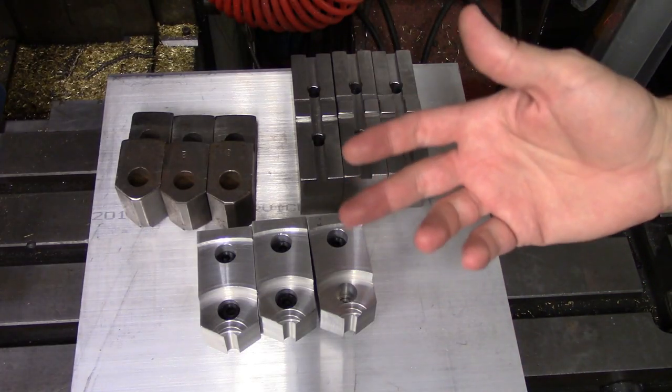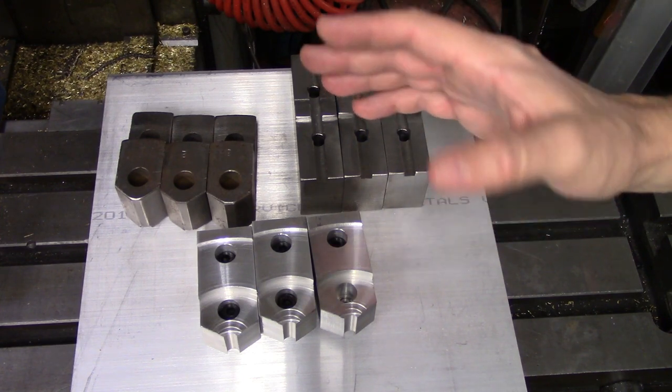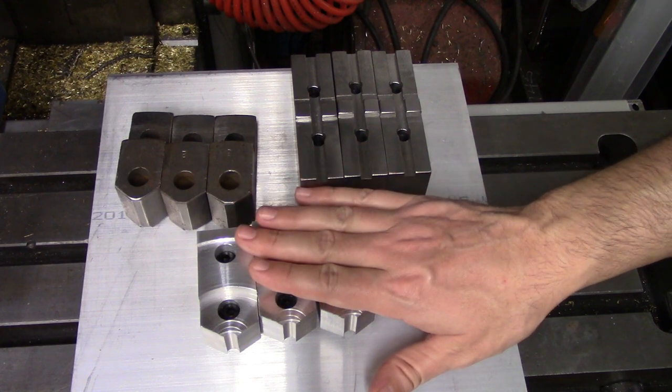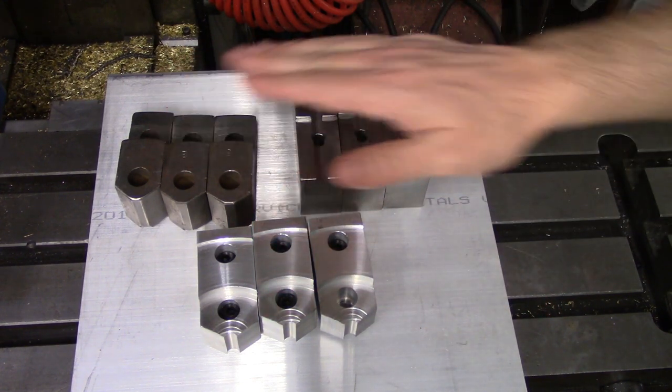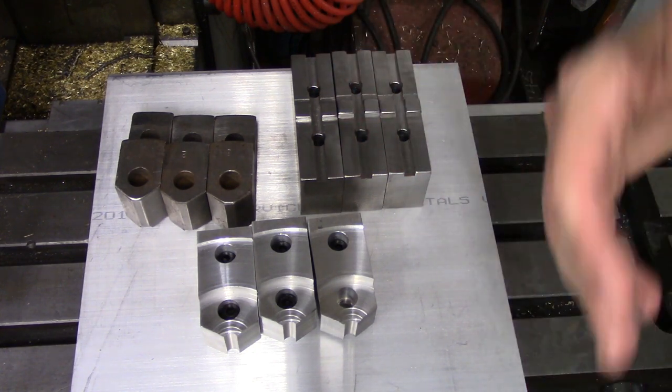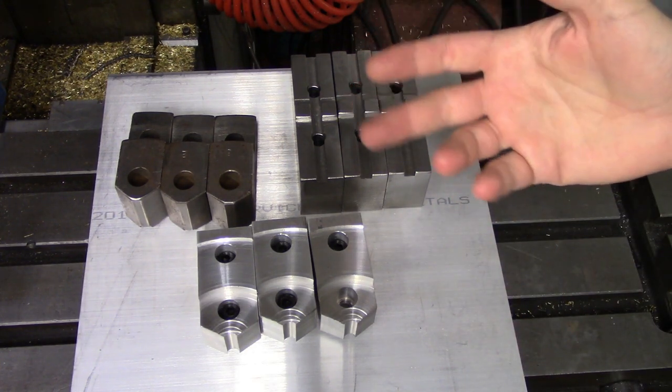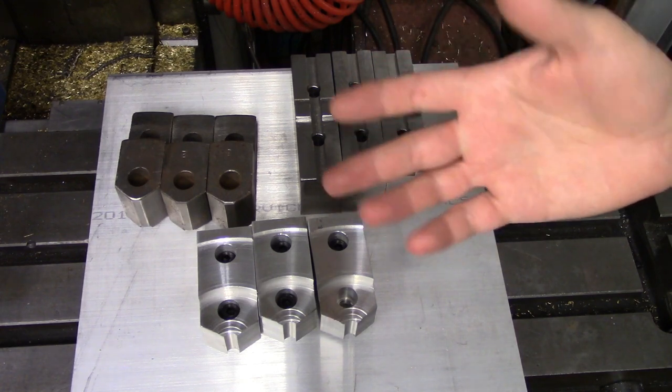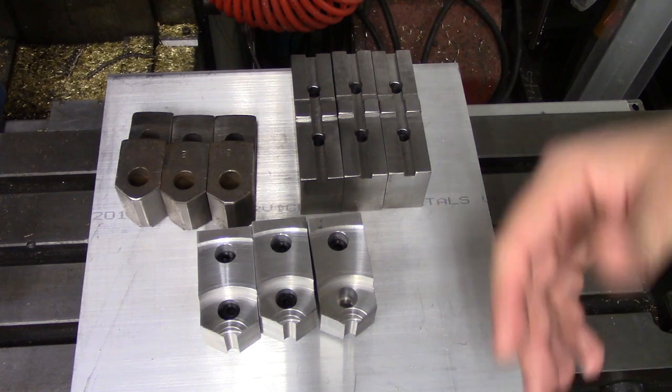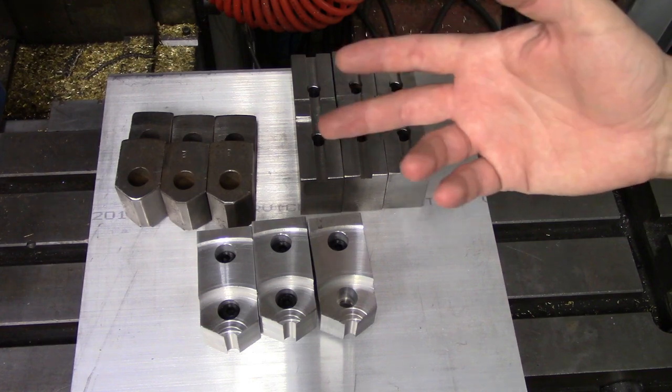When lathe chucks have two piece jaws the upper jaw that actually grips the part can be replaced with soft machinable jaws. These are usually made of aluminum because they are easy to machine and tend not to mar the part but steel jaws are also commonly used when more durability is required for instance long production runs. These can be used in many of the same ways as machinable collets such as holding thin parts that would wobble in standard jaws but have the added advantage of a much larger work envelope depending on your chuck size and the ability to clamp on the inside of a part.